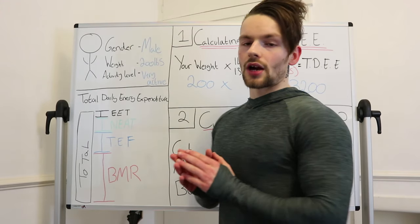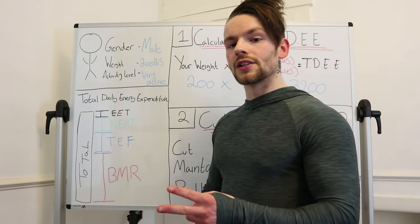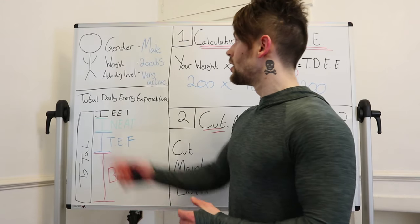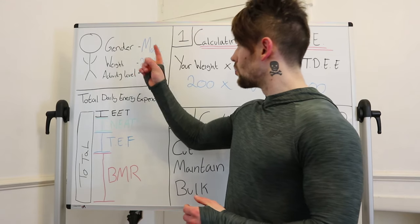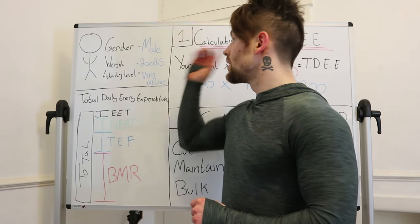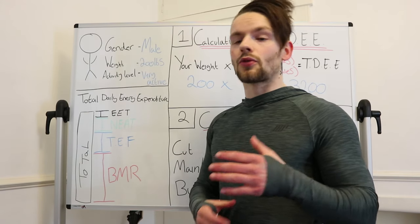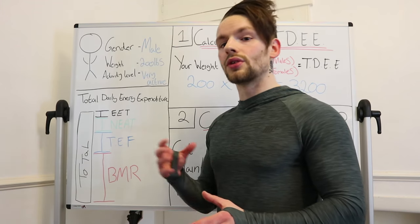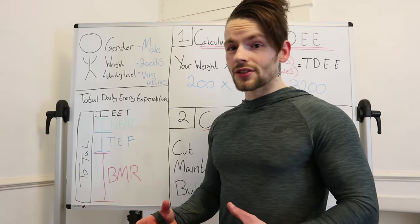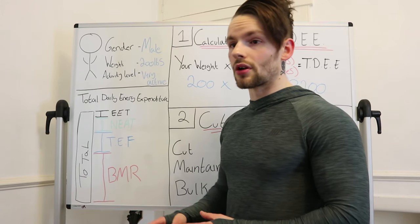Before we get into working out your macros and your calories, I want to run two things by you. First, I want to make sure that you've got written down on a piece of paper your gender, your weight — more specifically in pounds — and your activity level. If you're in the UK like me, you probably weigh yourself in stone or kilos, so you can find an online conversion calculator. If you're anywhere else in the world, you probably measure it in pounds anyway.